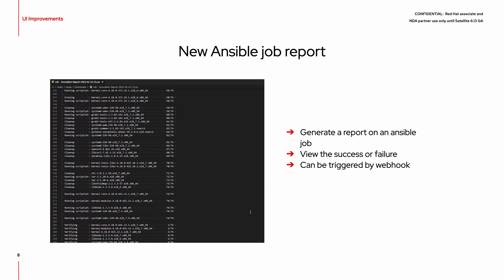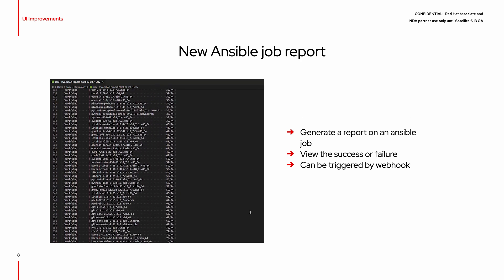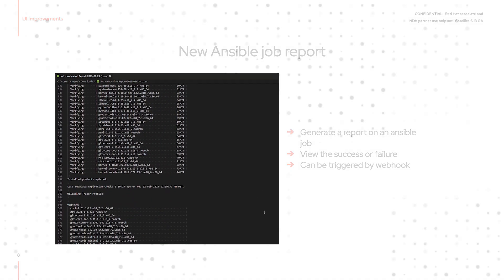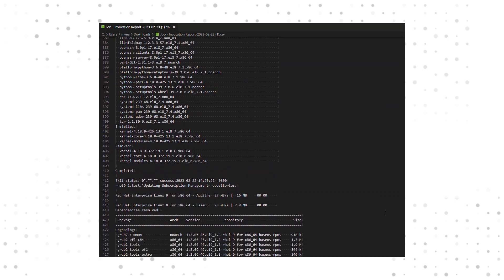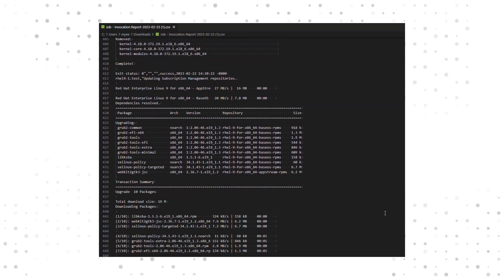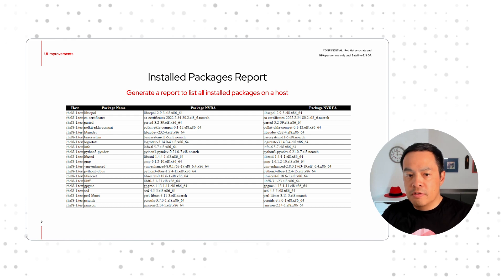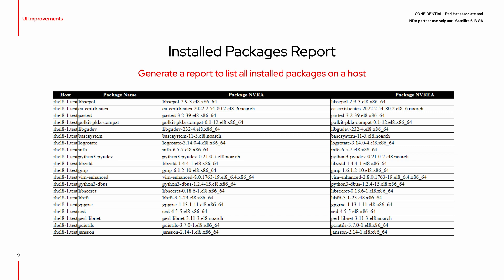Report generation can be triggered via webhook. In this video, you can see a report showing all of the details of the Ansible job that was executed. In 6.13, you can now generate a report that lists all the installed packages for a host. This makes it really easy to figure out what software you have installed on a particular host.